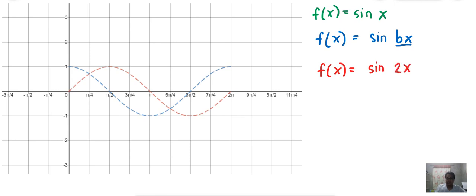Because of the presence of 2 dito, the period will change and the period is computed. The formula for period P is equal to 2π over the absolute value of b.